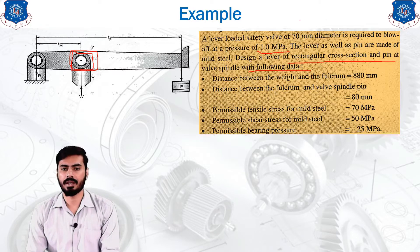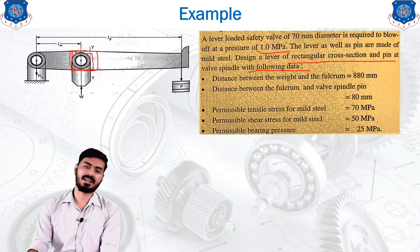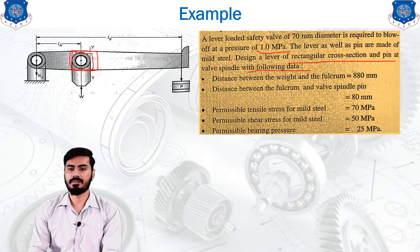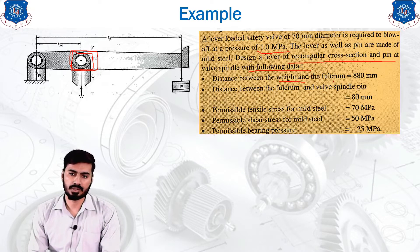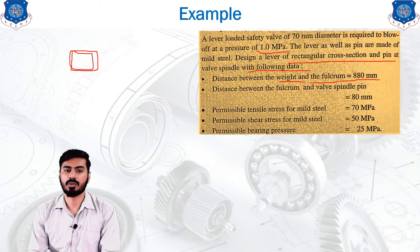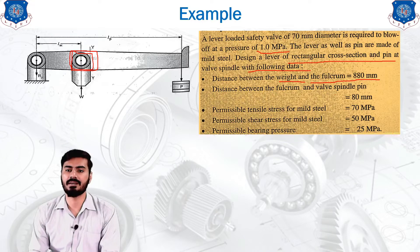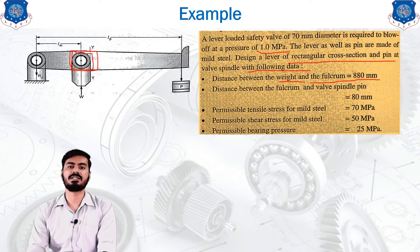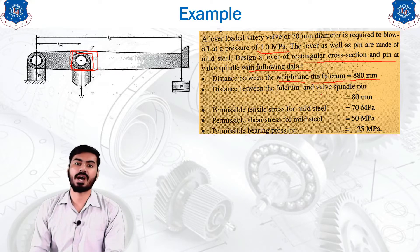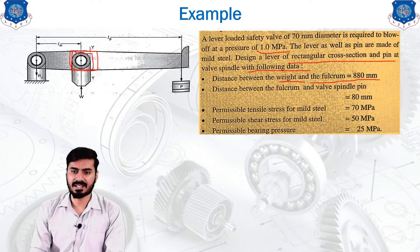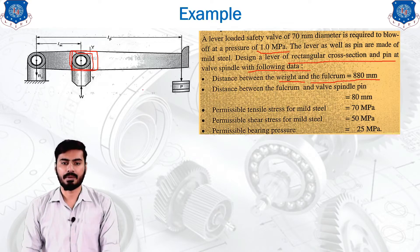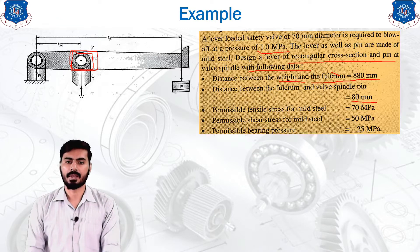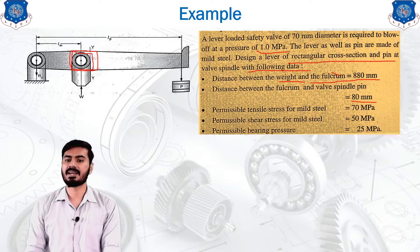The distance between the weight and the fulcrum is LP. In this type of lever, the weight is put on the lever to keep it in its current condition — the weight is our effort. The distance between the fulcrum and the valve spindle, which is our load arm, is represented as LW and is 80 mm.